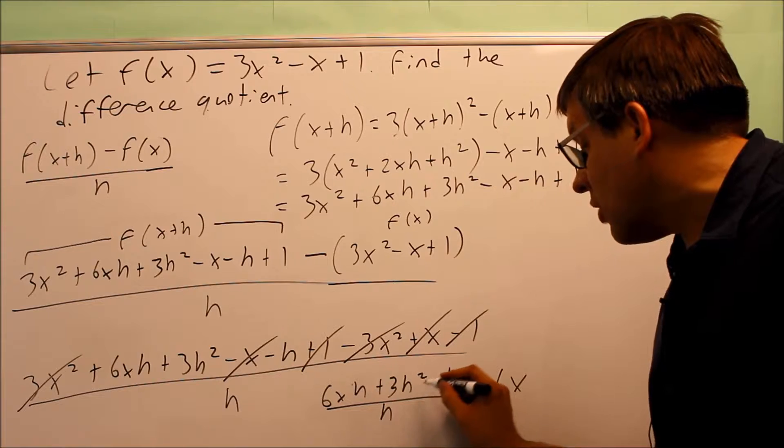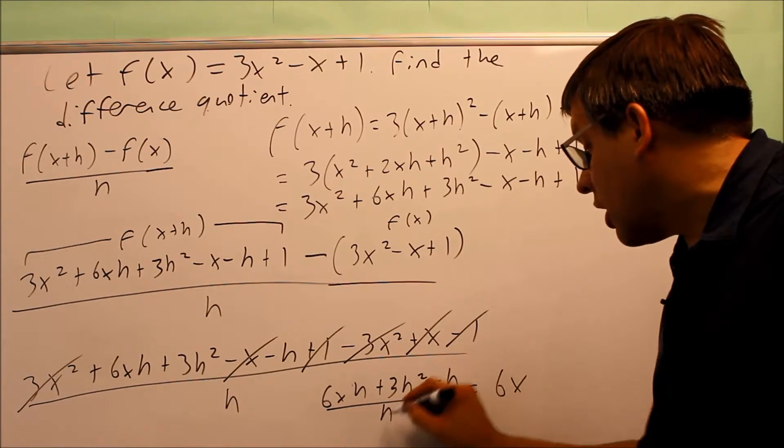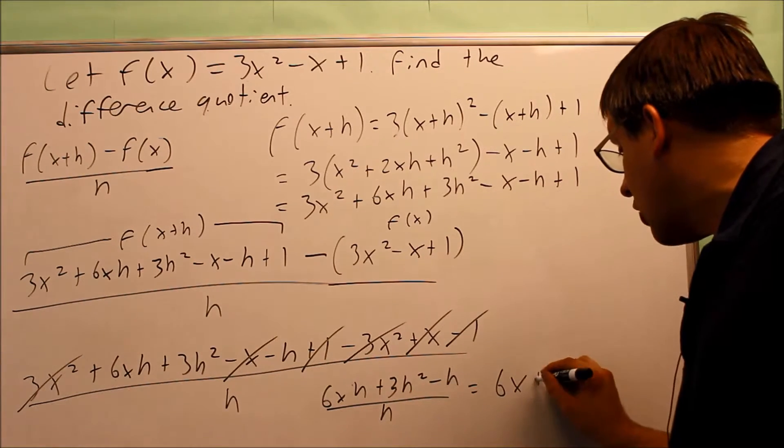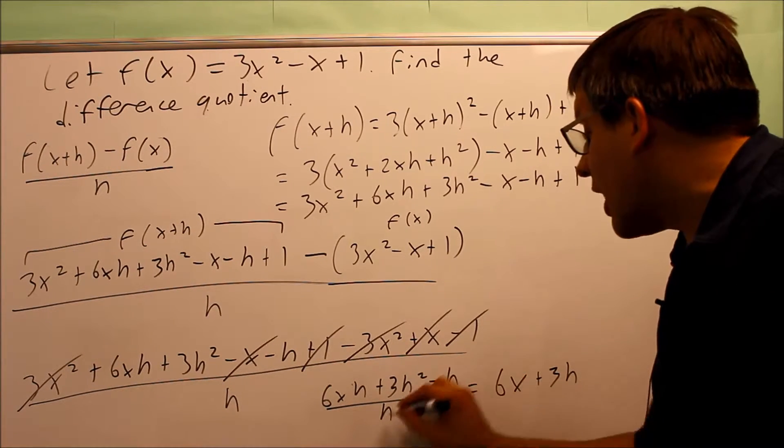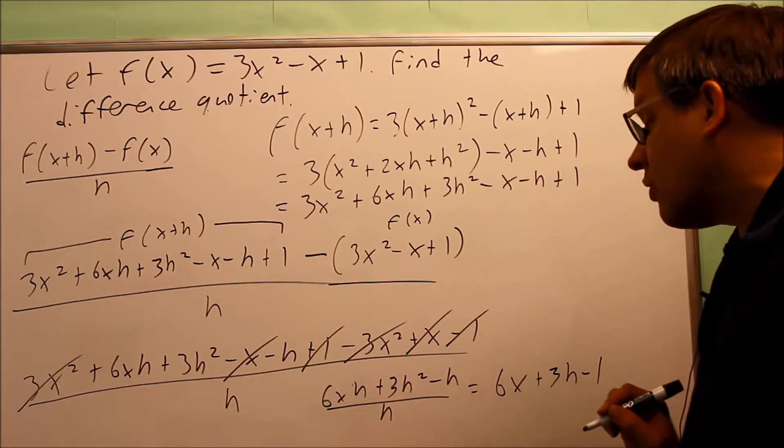Now this one I have to do the same thing. I have the square here, I have 1 on the bottom, that's going to give me 3h only. And then this one I have a negative h, I'm dividing it by h, I'm going to get negative 1.